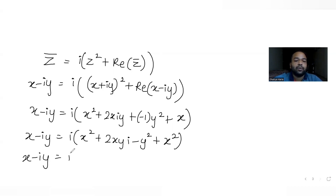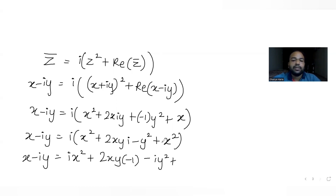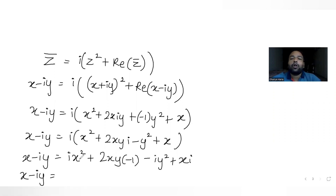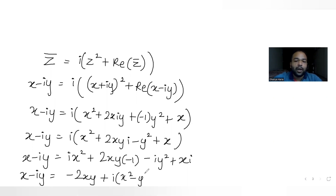Expanding further: x minus i·y equals i·x² plus 2xy·i² minus i·y² plus x, which gives x minus i·y equals minus 2xy plus i·(x² minus y²) plus x. Collecting real parts together and imaginary parts together, the real part is x minus 2xy, and the imaginary part coefficient is x² minus y² plus x.